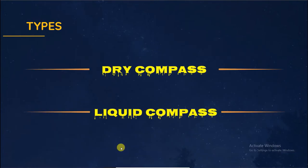There are two types of compass. First one is dry compass, mainly used in deserts. Second one is liquid compass, mainly used for submarines and ships.